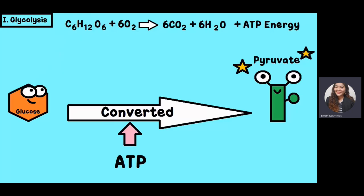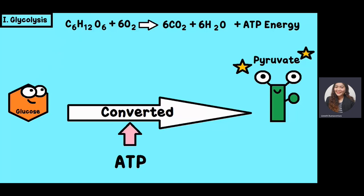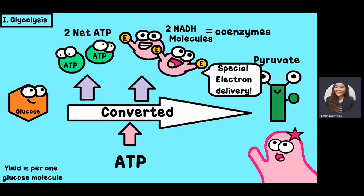Here is another illustration to understand glycolysis. Glucose — for example, from rice eaten in the morning — contains 6 carbons, 12 hydrogens, and 6 oxygens. This glucose will be converted into pyruvate. Using ATP, the process requires donation of phosphate and electrons to form pyruvate, producing a net of 2 ATP and 2 NADH.